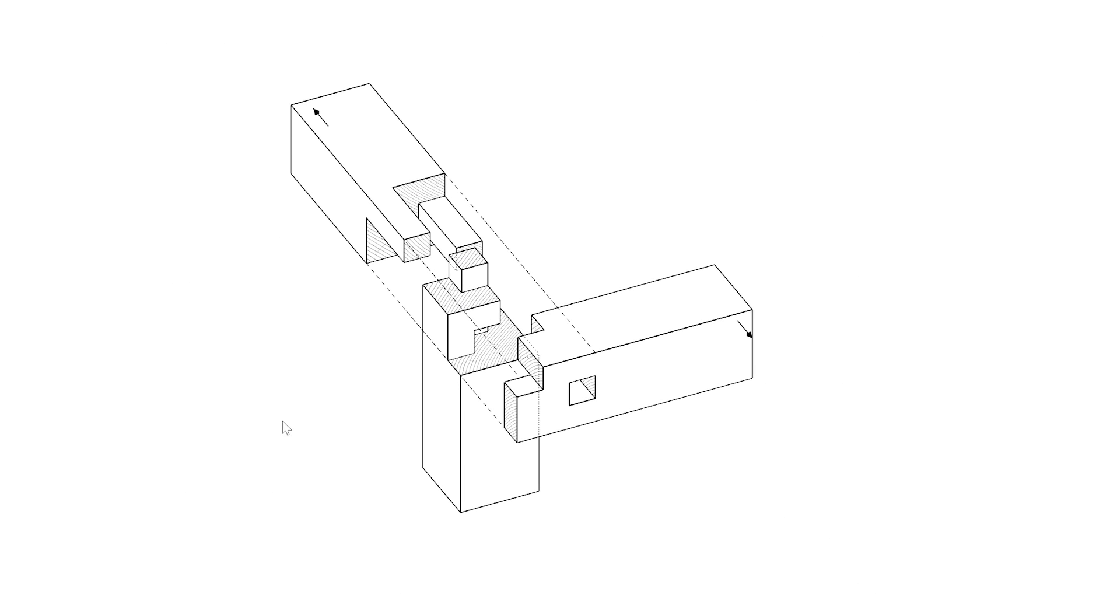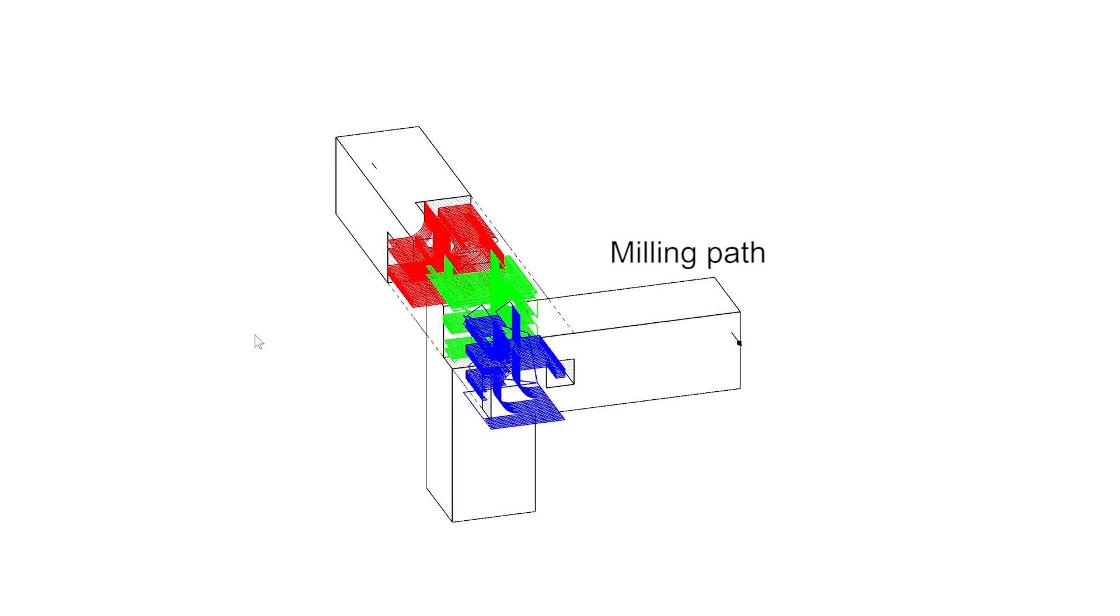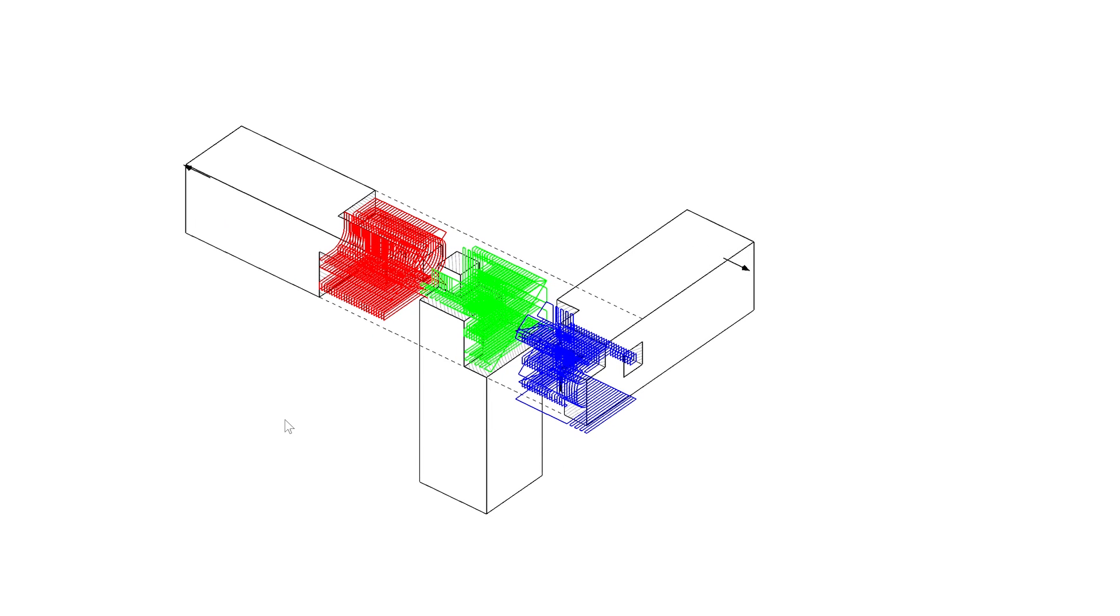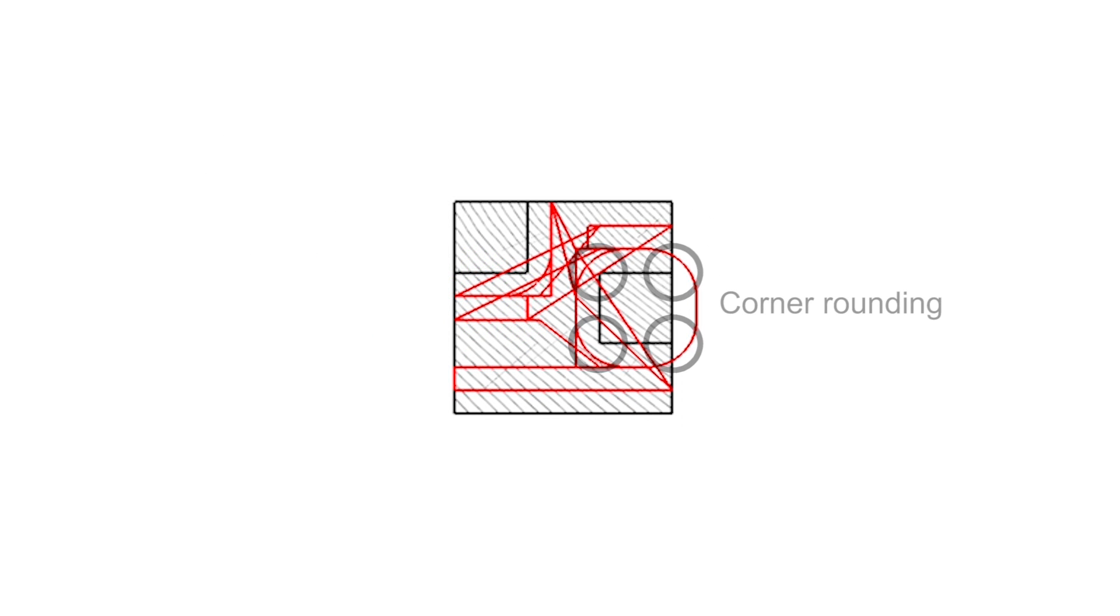After finalizing a design, Tsugite generates milling paths to fabricate the joinery, using a specialized path planning algorithm that selectively rounds outer corners to achieve assemblability.